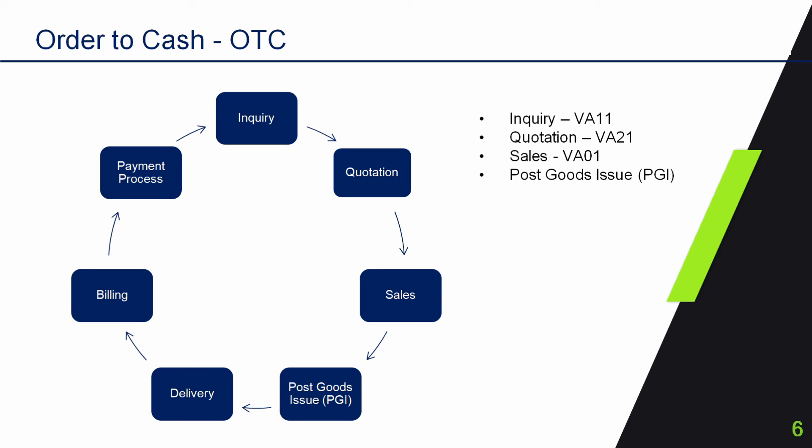Post Goods Issue (PGI) is the step where goods are picked up by the warehouse, packed, and shipped to the customer's shipping address. As per the sales order, we have accounting entries where inventory is credited against the cost of goods sold debited. General ledger accounts associated with cost of goods sold and inventory are affected respectively. Delivery follows PGI. Delivery is the actual fulfillment of goods to the customer's shipping address. At the delivery stage, we debit the revenue account and credit the customer account. The transaction code for delivery is VL01N.